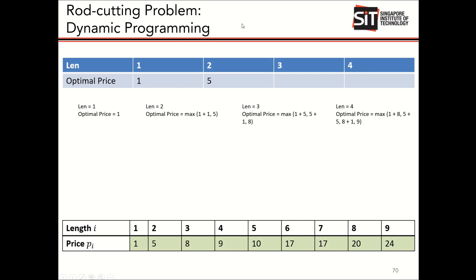Conversely, if I cut at two and one, the value of two comes from the optimal price table and the value of one from the price table, giving five plus one. If I don't cut it, I get a value of eight from the price table. The maximum of these three is eight, which is placed in the optimal price table.